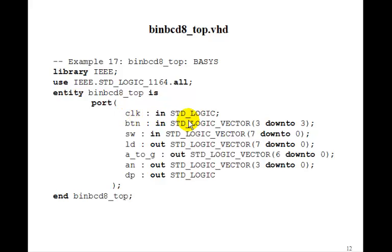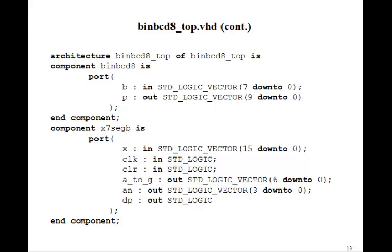Here's what the top-level entity would look like. We've got the clock coming in, a button. This should be really M-clock. Switches, LD, A to G, AN, and decimal point. And the component binary to BCD and X7 seg B. So now we put two components in the architecture.